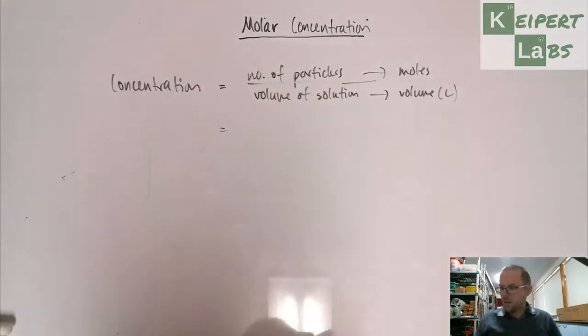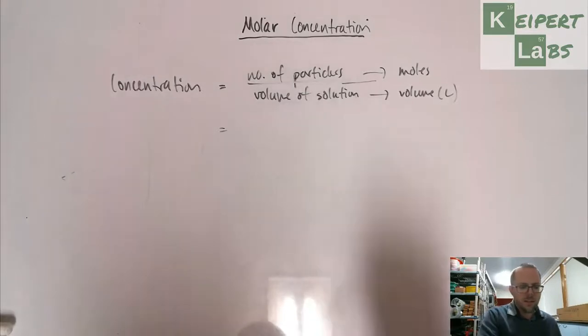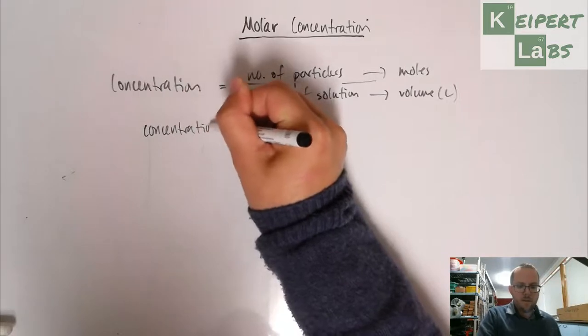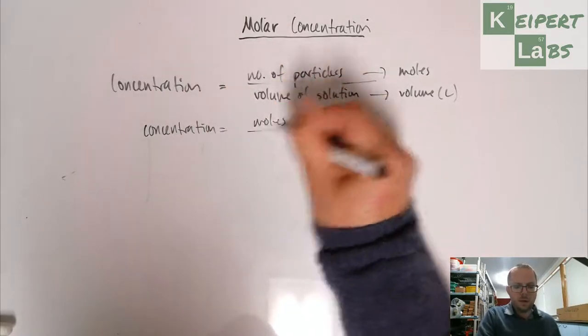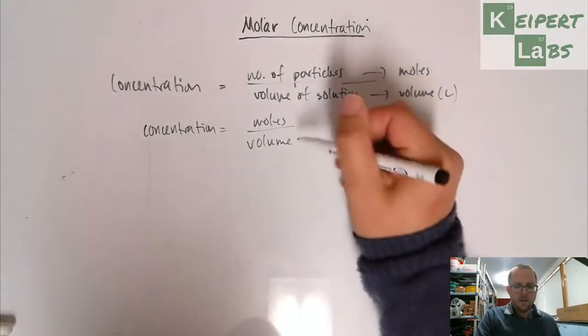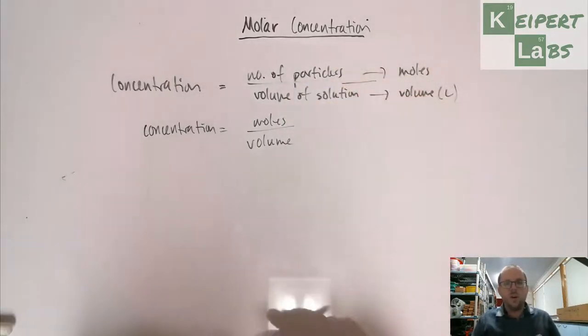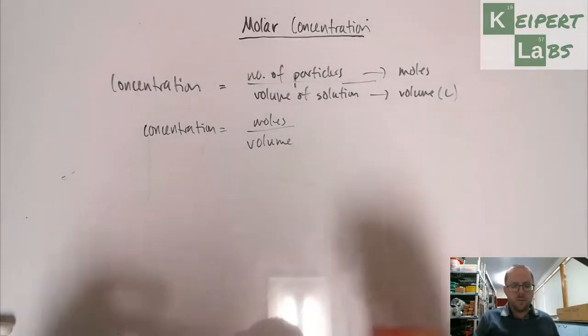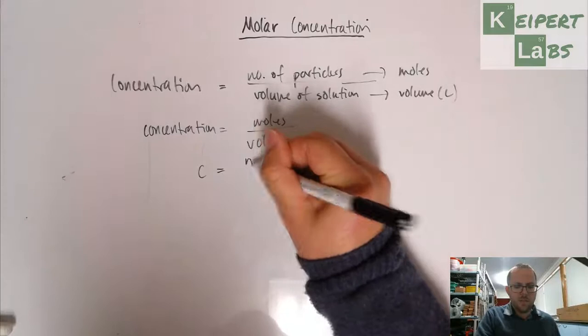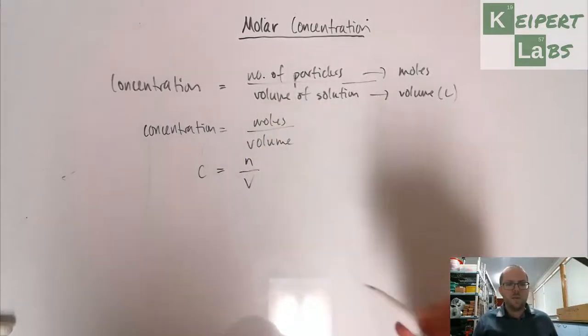So therefore, the concentration equals moles divided by volume. So we use a formula, we can use shorthand to represent this. C for concentration is number of moles N divided by the volume V.